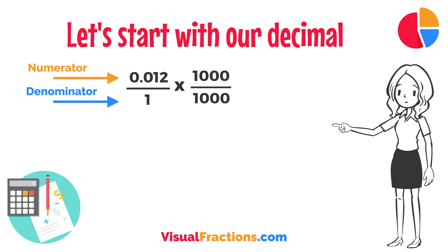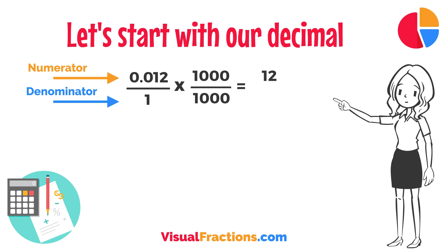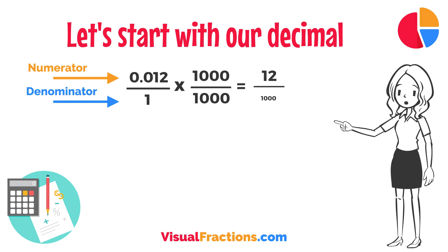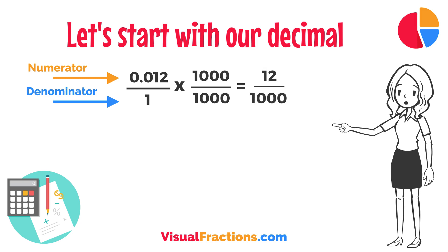So, 0.012 times 1,000 gives us 12, and 1 times 1,000 gives us 1,000. This translates 0.012 to the fraction 12 over 1,000.